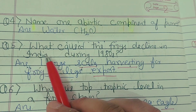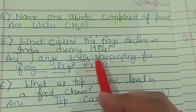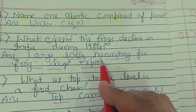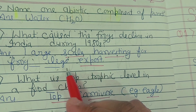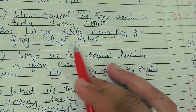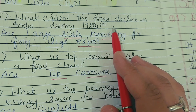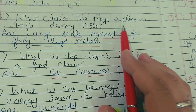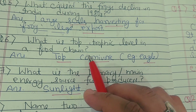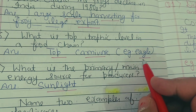Question number five: what caused the frog decline in India during the 1980s? The answer is large-scale harvesting for frog legs export. As frogs were exported at a large scale, their harvesting also increased, and that is the main reason for their population decline.